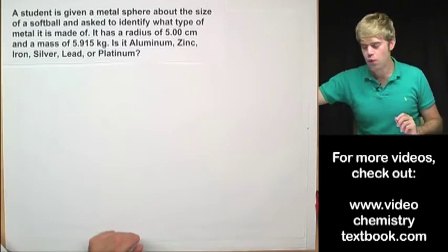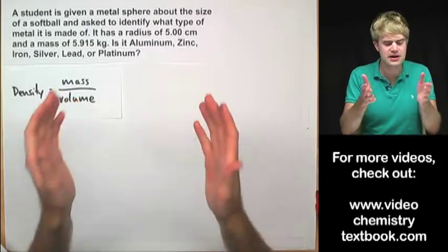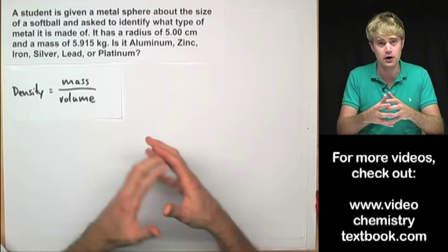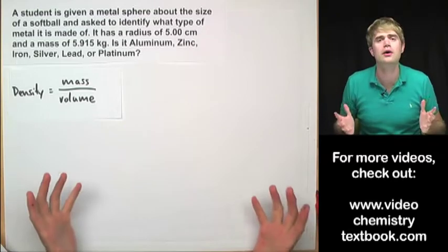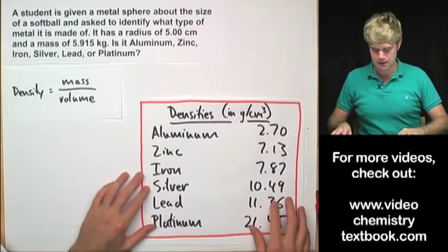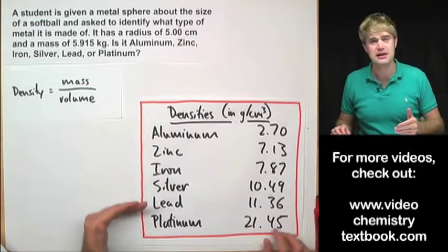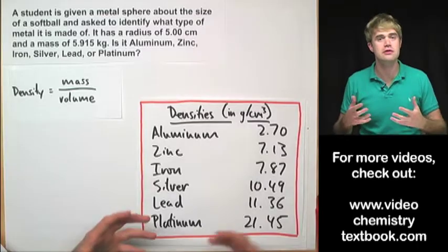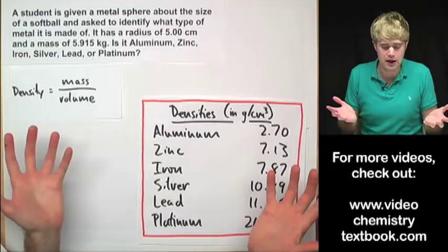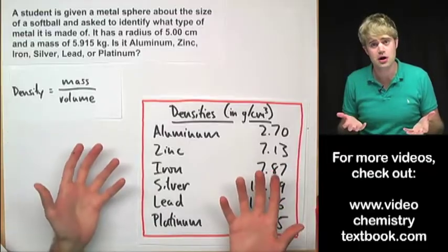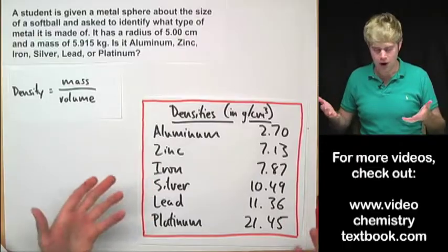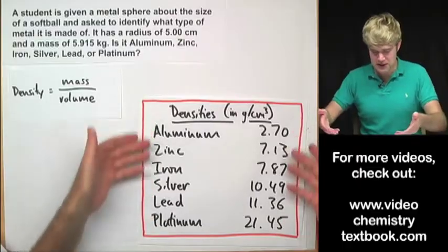So what we got to do here is identify what type of metal this big sphere is made of. How are we going to do that? Well, it turns out that each type of metal has a different density. So the density of a metal is sort of like the fingerprint of it. So if you take something that's made of metal and you don't know what kind of metal it is, you can measure the density and then you can match it up here and you can figure out what type of metal it is based on its density.